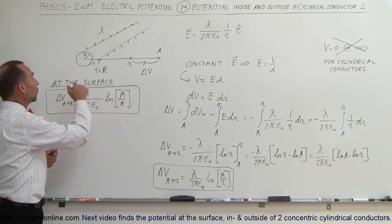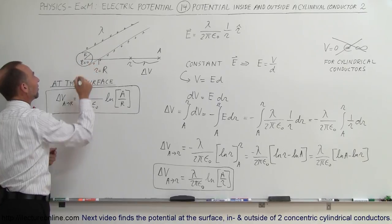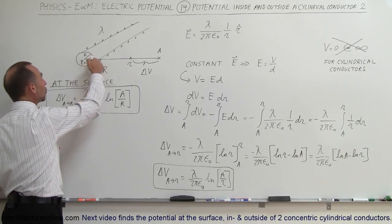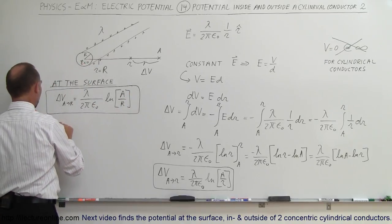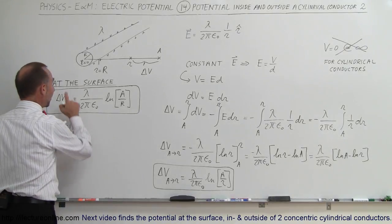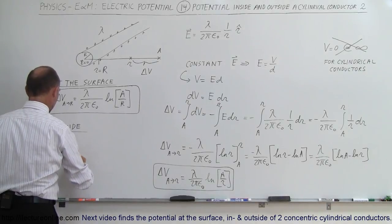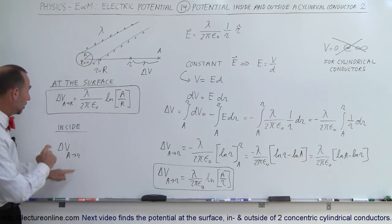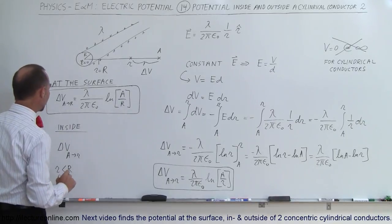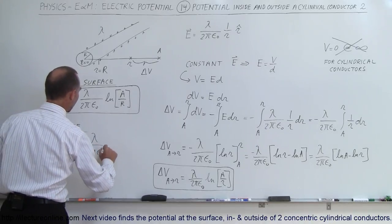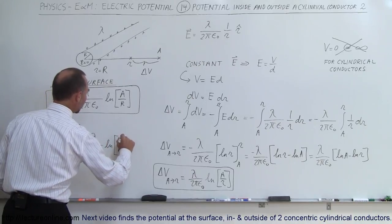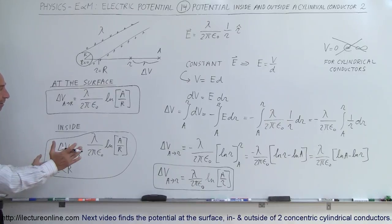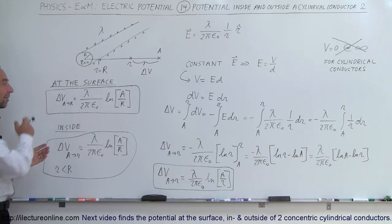What about inside? Inside the cylinder the electric field is equal to zero. Inside any conductor, all the charge is on the outside, which means there's no electric field on the inside. This means that the potential doesn't change as you go inside, so the potential inside must be the same as the potential on the surface. Therefore, delta V from A to some point inside the cylinder where r is less than the radius equals lambda divided by 2π ε₀ times the natural log of A over the radius of the cylinder — just like on the surface.